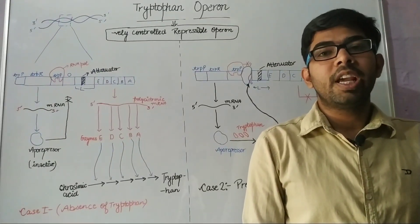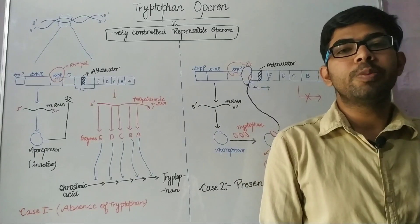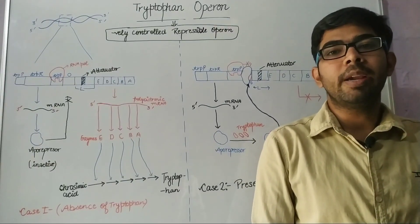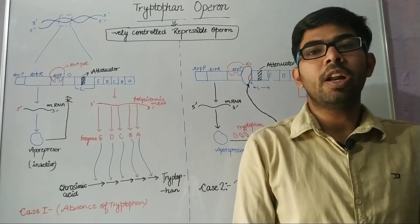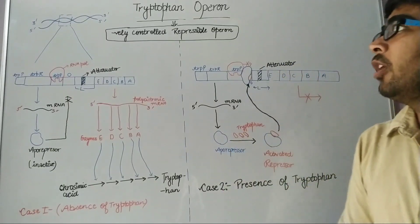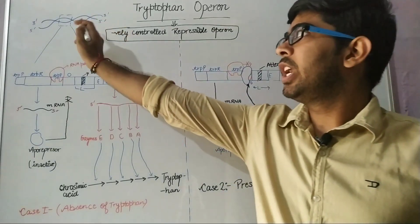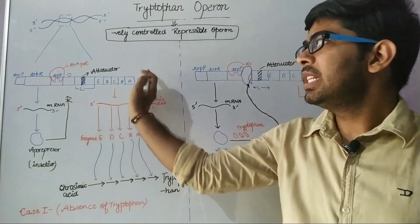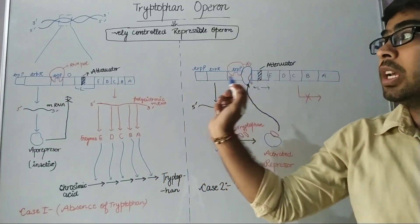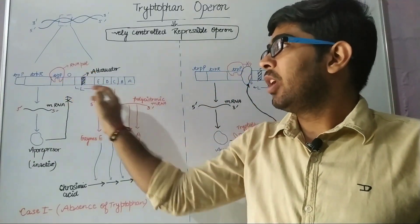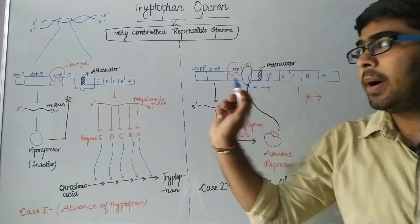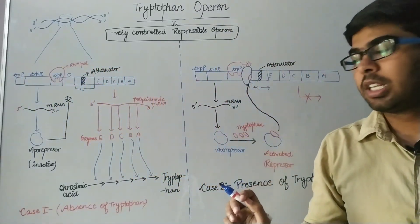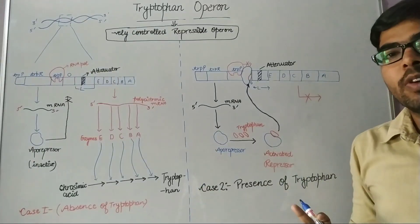Good morning everyone, a very warm welcome to my YouTube channel Deep Biology. In this lecture, we will study the basic concept of tryptophan operon. The tryptophan operon is a segment of DNA which includes a promoter gene, operator gene, and structural genes. This operon segment is regulated by the tryptophan regulatory gene.